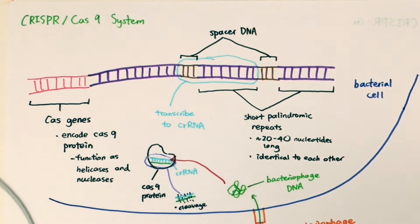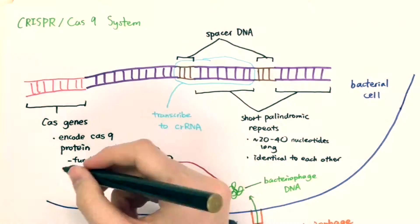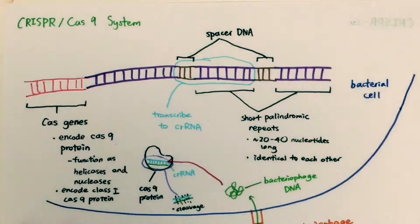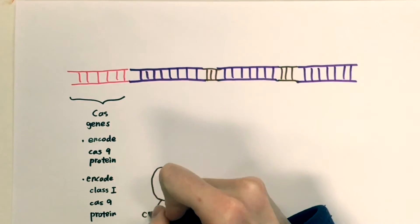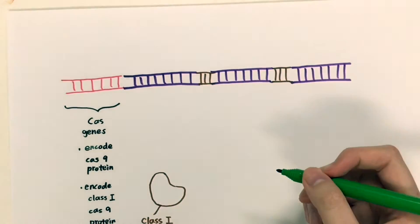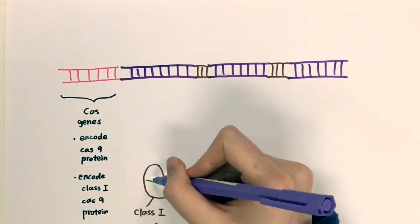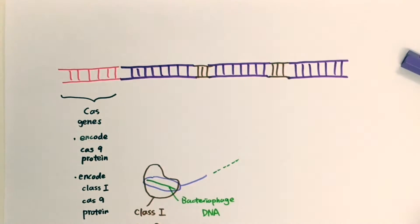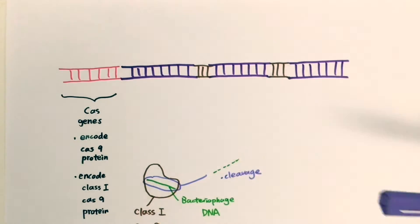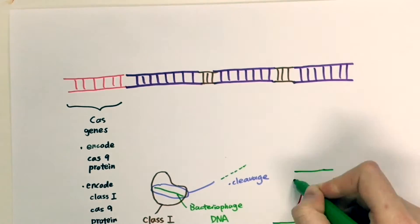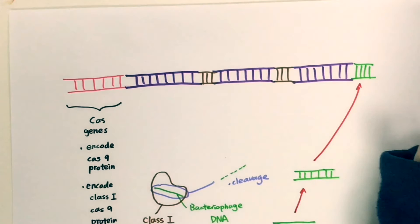This system encodes another protein called Cas1 protein. It can break down the bacteriophage DNA and copy the bacteriophage DNA to insert it into the CRISPR system as spacer DNA. This creates memory to the bacteriophage DNA and prevents reinfection of the same bacteriophage.